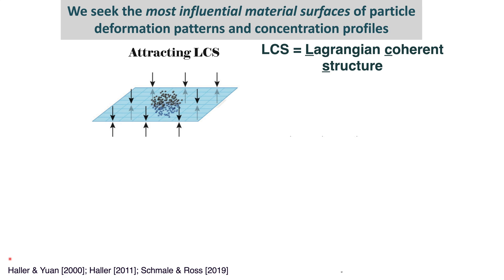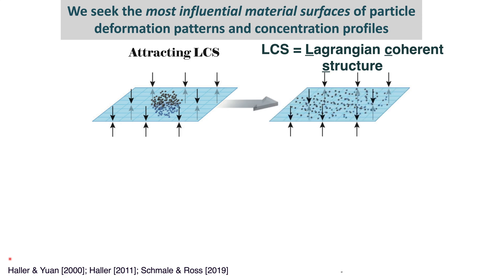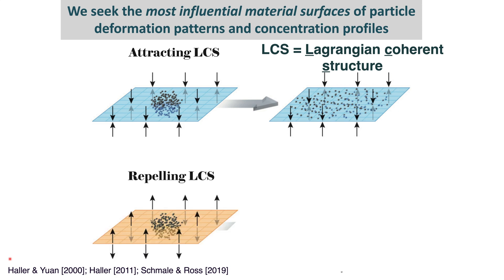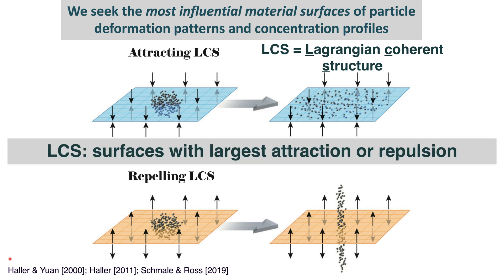This term was first used by Haller and Yuan in 2000. An attracting LCS is a surface such that any blob that straddles this surface will be attracted to it. There are also repelling LCS, where a blob that straddles it will be repelled from it. In general, LCS are surfaces with the largest attraction or repulsion.